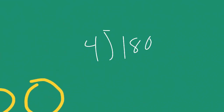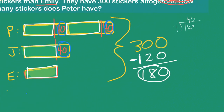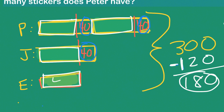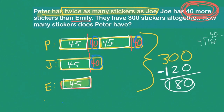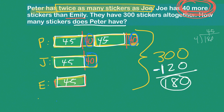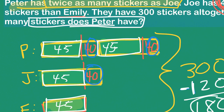180 divided by 4. You know that 4 and 4 is 16, there's two extra, and that's 4 into 20 — it's 5 — so 45. So each of these blocks is 45, 45, 45, 45. My question is asking how many stickers Peter has. Let's zoom in on Peter. Peter's got 45 plus 45, that makes 90. This 40 plus 40 is 80. 90 plus 80 is 170.